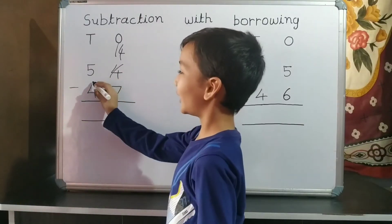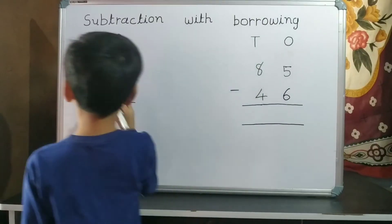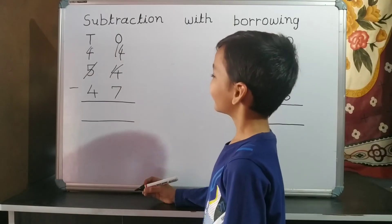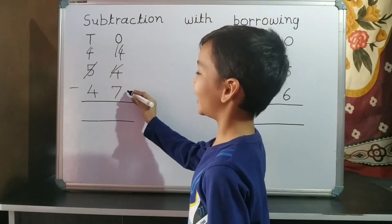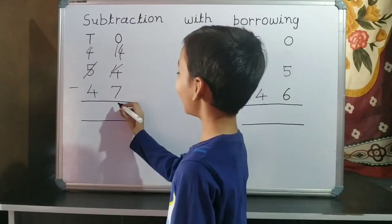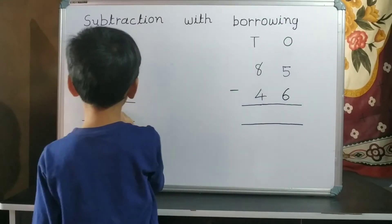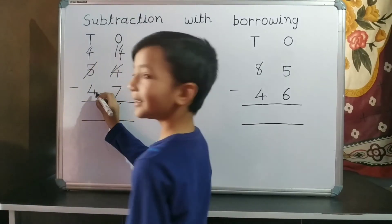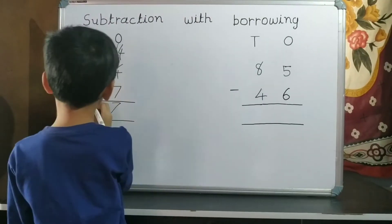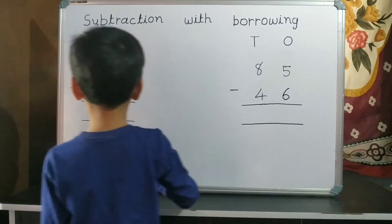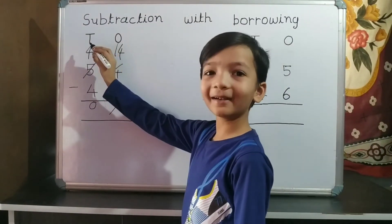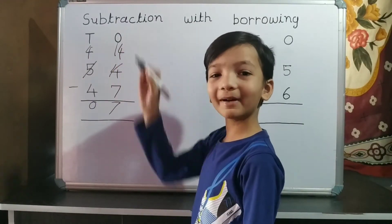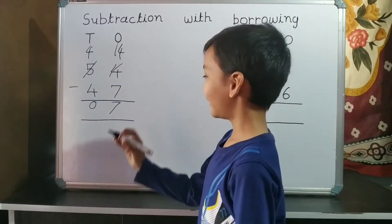Now 5 becomes 4. 14 minus 7 equals 7. 4 minus 4 equals 0. 0 is on 10's place, 7 is on 1's place, so our answer is 7.